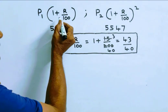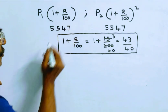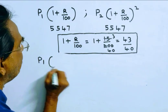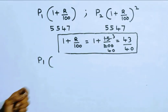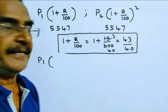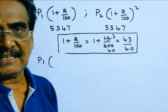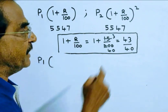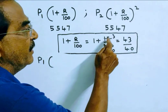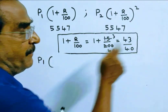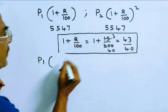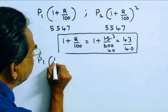This is the first installment. P1 into (1 + R/100). Now, 1 + R/100: R is equal to 7.5%, which is 15/2, so R/100 = 15/200. Therefore 1 + R/100 = 43/40.